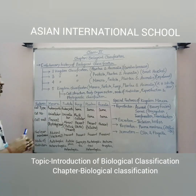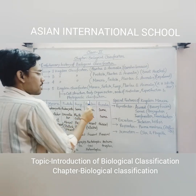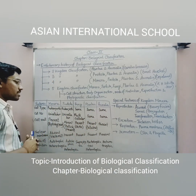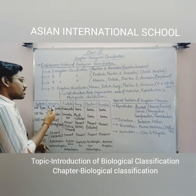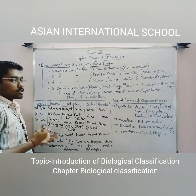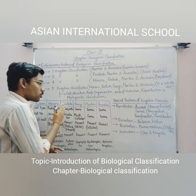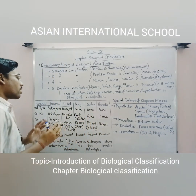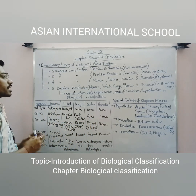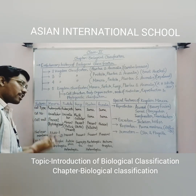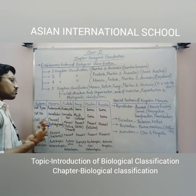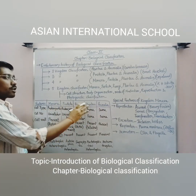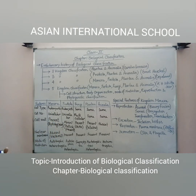Based on cell type: Monera contains bacterial cells with a primitive nucleus, so they are all prokaryotic. Starting from Protista up to Animalia, all organisms contain cells with a true nucleus enclosed by a nuclear membrane and with a nucleolus — so they are all eukaryotic. Based on cellular number: Monera and Protista are unicellular (single-celled), while Fungi to Animalia are all multicellular.